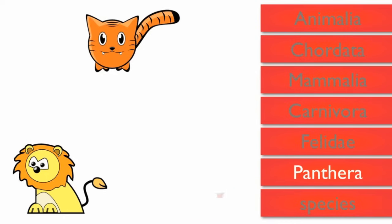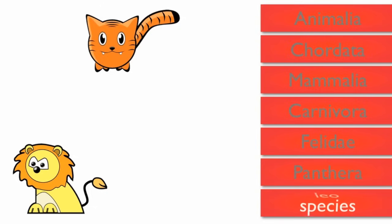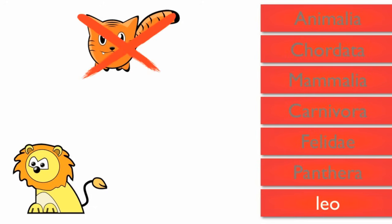Finally, we have the level called species. Members of the same species can breed and produce offspring. A lion is in the species Leo. So the tiger is removed from this group.